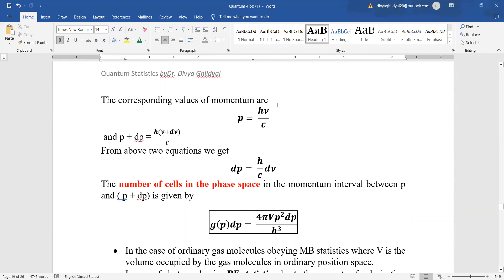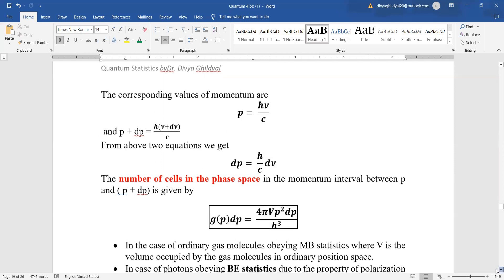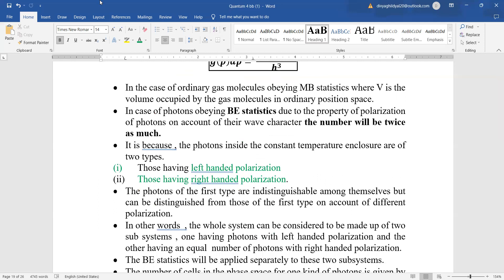Since we are introducing quantum physics and that this wave is traveling with bundles of packets of energy, we will introduce momentum expression: momentum is h mu by c, where h is Planck's constant, mu is frequency, and c is velocity of light. In differential form we can write dp equals h by c d mu.